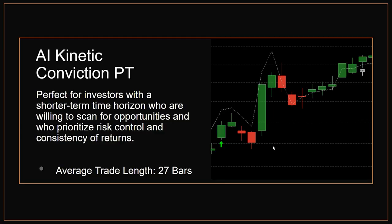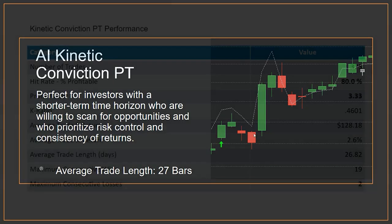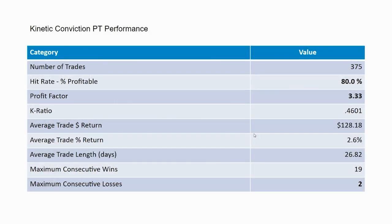The final system is the most selective of all the systems — it's the AI Kinetic Conviction PT. This is perfect for investors who have a shorter time horizon, are willing to scan for opportunities, and want to prioritize risk control and consistency. The average trade length is 27 bars. In the back-test period, it generated 375 trades with an 80% profitability ratio and a profit factor of 3.33.